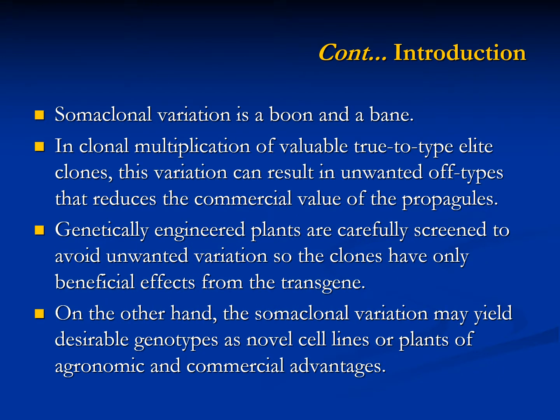The occurrence of somaclonal variation is both a boon and a bane. When the objective is clonal multiplication of true-to-type elite clones, this variation can result in unwanted off-types that reduce the commercial value of the propagules. Similarly, genetically engineered plants are carefully screened to avoid unwanted and unintended somaclonal variation so that the commercially released clones have only beneficial effects from the transgene.